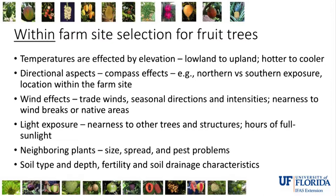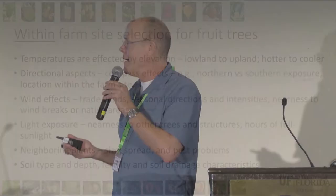Within a farm you could have several different soil types — from more fertile to much less fertile. Some tree crops actually give you more control of their flowering, fruiting, and growth in low fertility soils. In contrast, bananas, papayas, and carambola love fertile soil. Mangoes, lychees — they actually do better in less fertile soil.